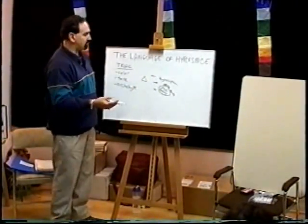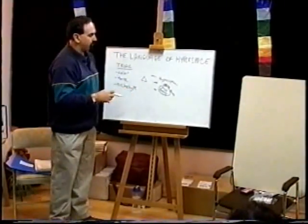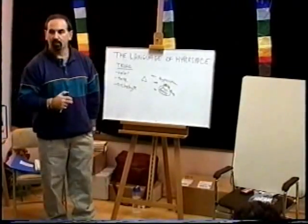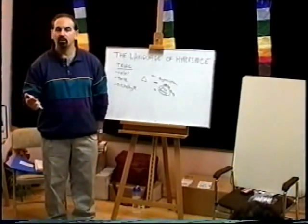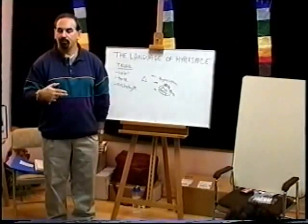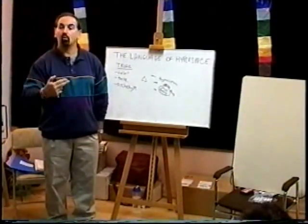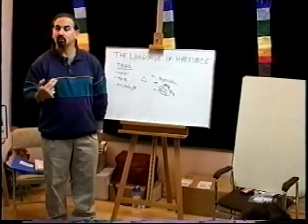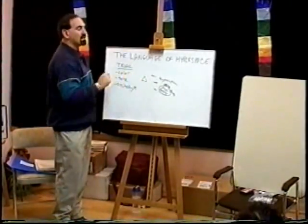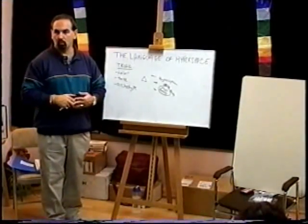The triangle is the symbolism of the pyramids, and that is perfect creation — just a symbol of perfect creation. You'll notice that in many uniforms or symbols throughout the corporate world, business world, and government, they use a lot of triangle symbolism because they're creating their own perfect world.